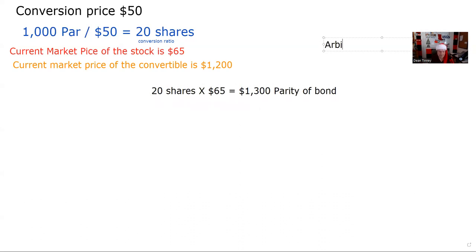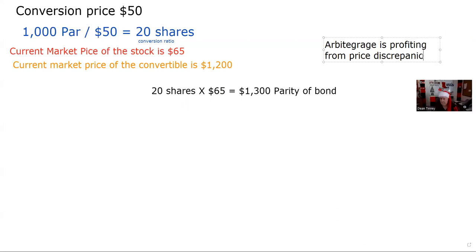Arbitrage is profiting from price discrepancies. By the way, that could be a test question — they could just point blank say profiting from price discrepancy can best be described as arbitrage, and you've got to come up with arbitrage.